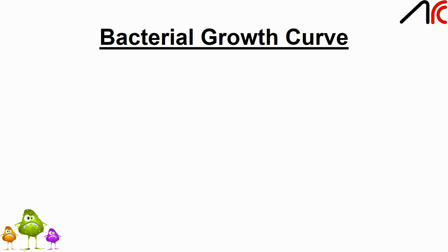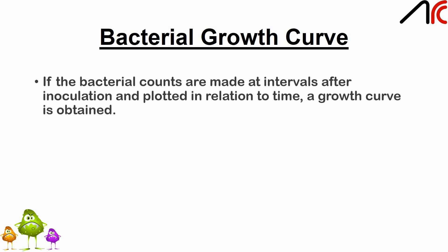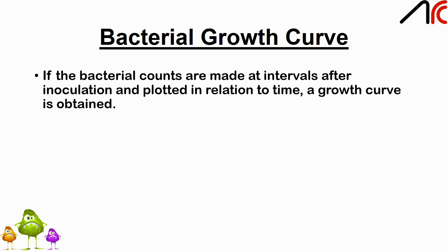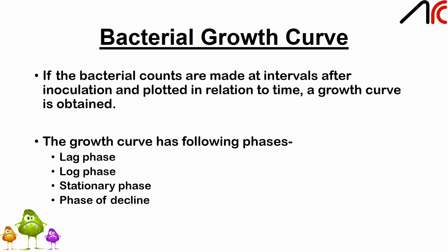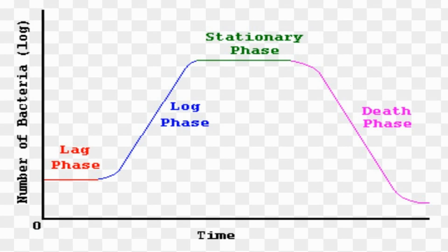Bacterial growth curve: if bacterial counts are made at intervals after inoculation and plotted in relation to time, a growth curve is obtained. The curve shows the following phases: lag phase, log phase, stationary phase, and phase of decline. This graph shows the bacterial growth curve with all four of these phases.